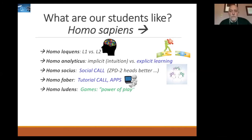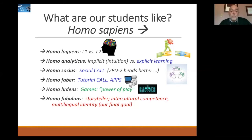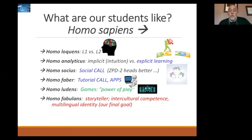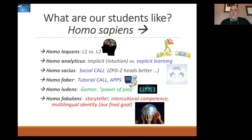We also want to consider that we're homo ludens — there's great power in play. We love to play games, but also to play at learning languages, and if we can harness this we'll create something very interesting for students. Finally, and most importantly, we are homo fabulans — storytellers. We love to tell stories all the time, whether to neighbors, friends, or colleagues. The end game of second language learning is to imbue students with the ability, intercultural competence, and linguistic ability to tell stories not only in their first language but also in a second or third language — in other words, to develop a multilingual identity.